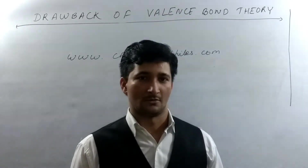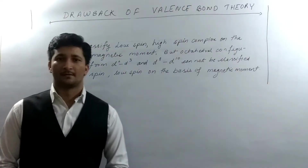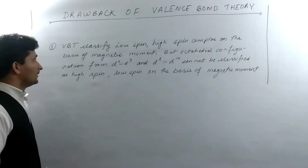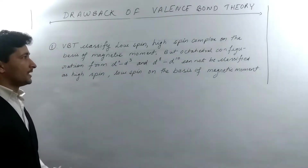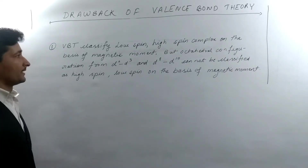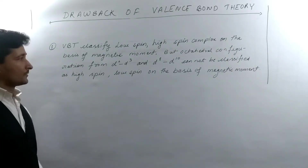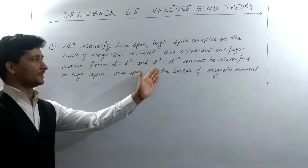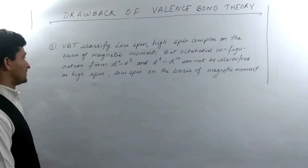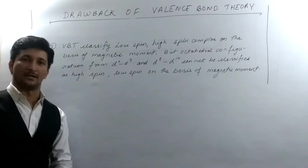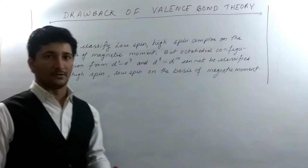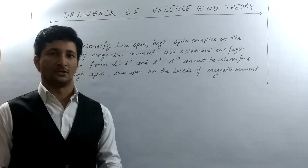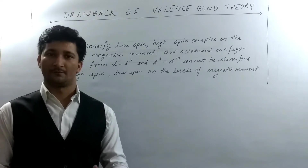So let's start with the drawbacks of valence bond theory. One drawback of VBT is that it classifies low spin and high spin complexes on the basis of magnetic moment, but octahedral configurations from D0 to D3 and from D8 to D10 cannot be classified as high spin or low spin on the basis of magnetic moment. I will now show you some examples where there is ambiguity in case of low spin and high spin complexes.